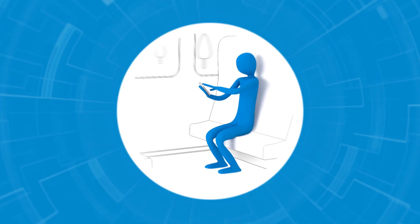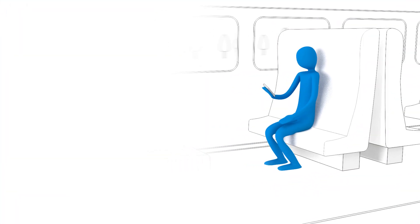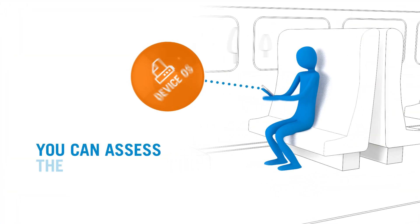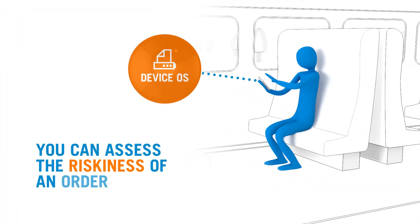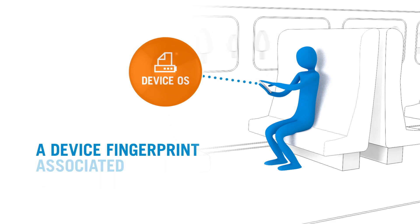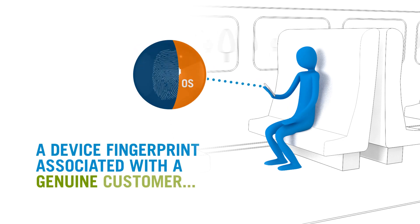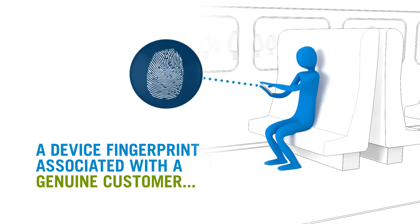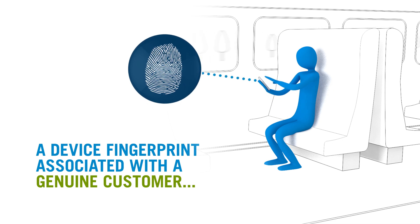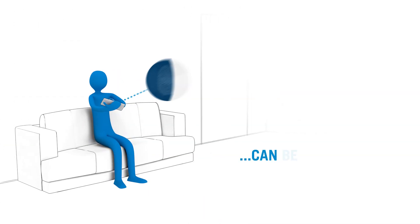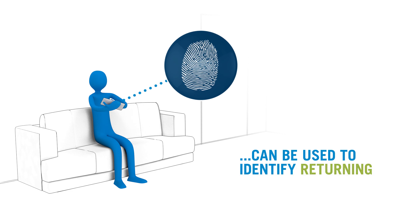For example, the information on a device's operating system can be used to assess the riskiness of an order. Because a mobile device is rarely out of its user's reach, a device fingerprint associated with a genuine customer can be used to recognise returning customers and provide them with a streamlined checkout experience.